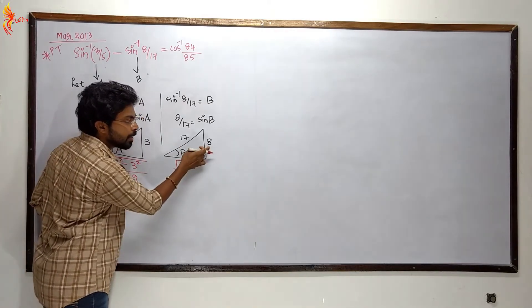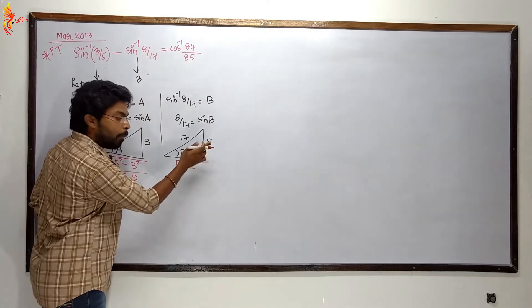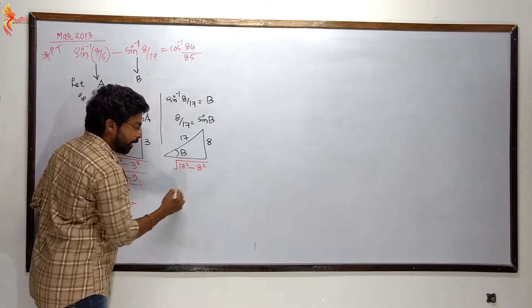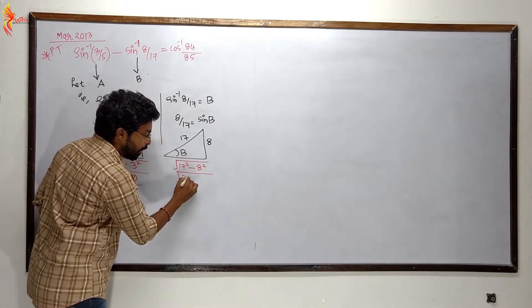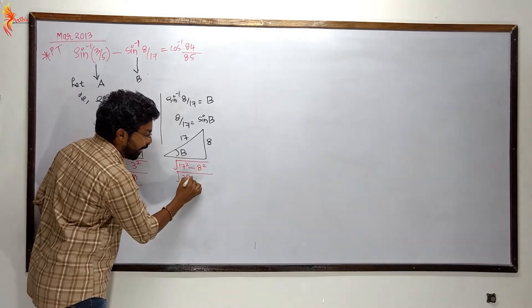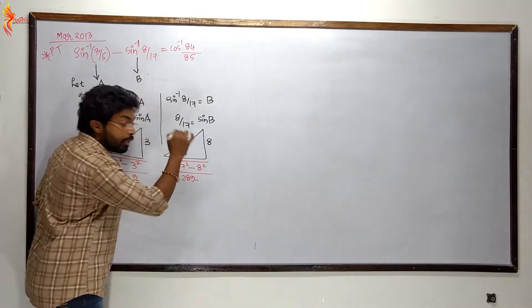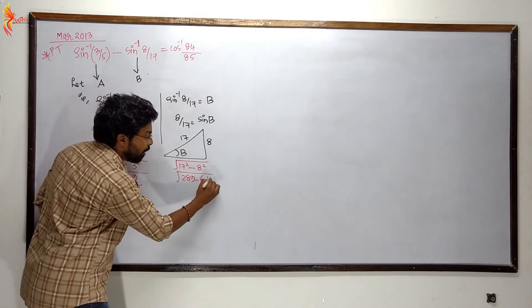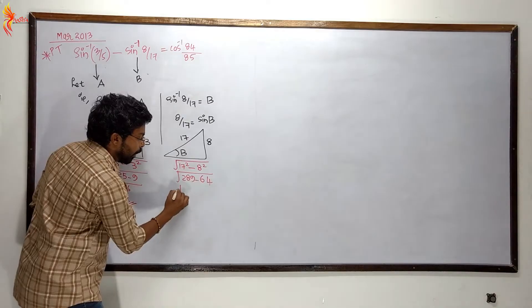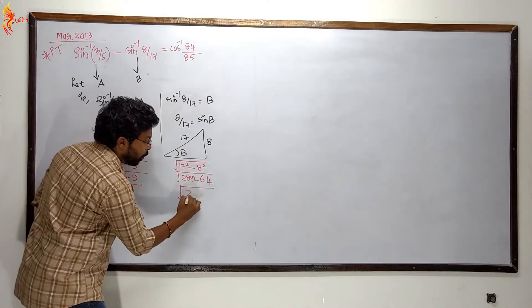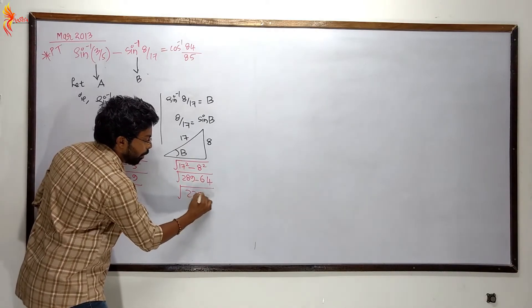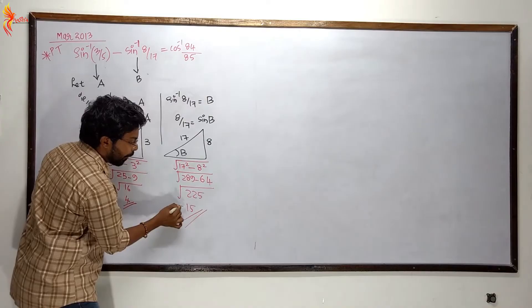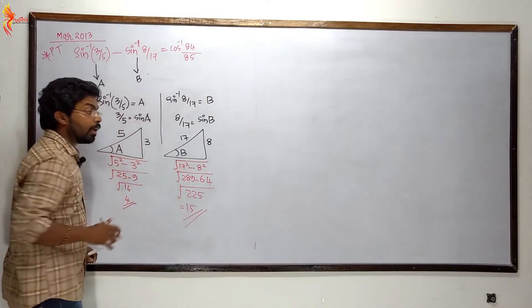For angle b: 17 squared minus 8 squared — 17 squared is 289, 8 squared is 64 — gives root of 225, which is equal to 15. So this adjacent side is equal to 15.